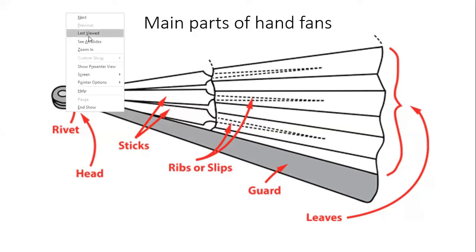Loop: attachment to the pivot pin/rivet which allows the fan to be hung from a ribbon.